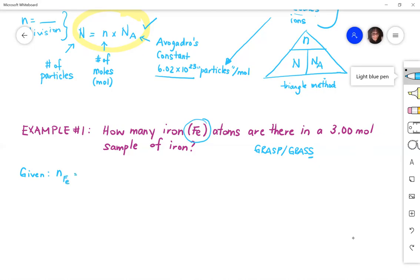So let's start off by writing down what we're given. So G stands for given. So we're given some information about the number of moles or n of iron, and that's equal to 3.00. Also, what you should know in the background is your Avogadro's constant. So that's what you're also given in these questions. So let's also write that down.